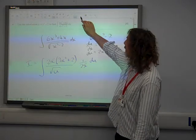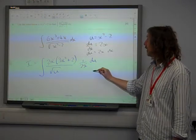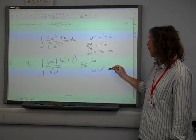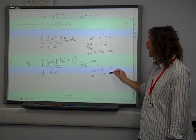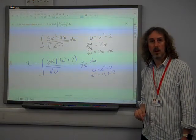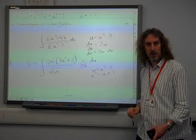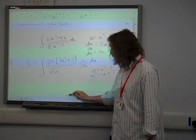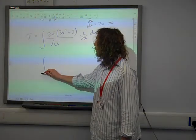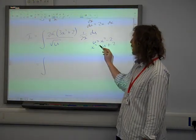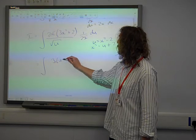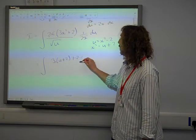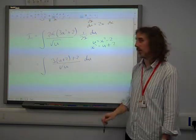We've still got this 3x squared plus 2 hanging around. How are we going to do that? Well, look at our substitution over here. If u equals x squared minus 2, then x squared is u plus 2. So we've got something we can do with that. So the integral now becomes the integral of 3 times u plus 2 plus 2 over root u, du.